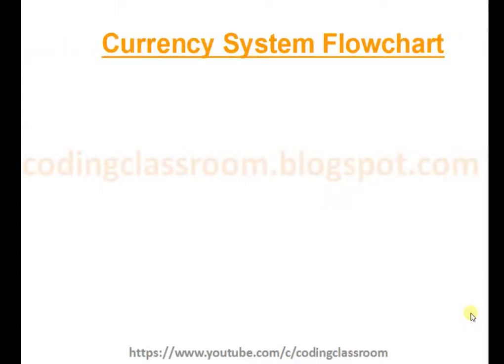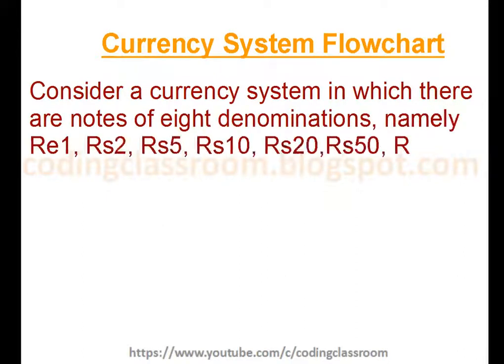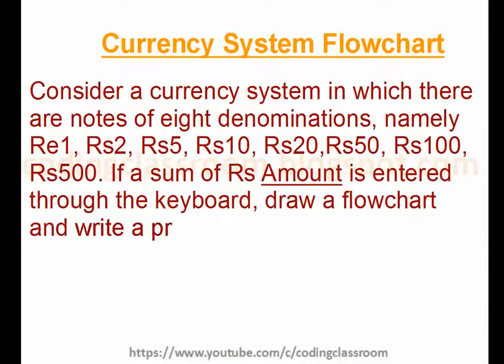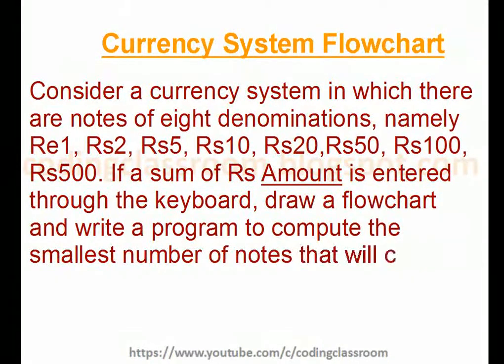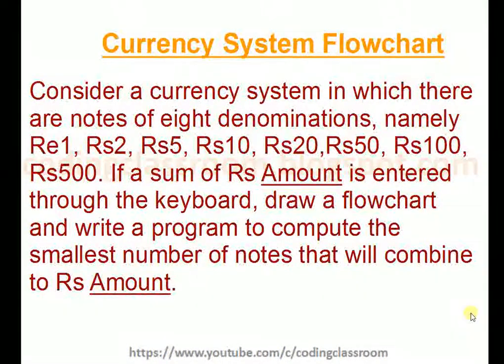Hello guys, welcome to the Coding Classroom. Today we consider an example: a currency system flowchart. We consider a currency system in which there are notes of eight denominations, namely rupees 1, 2, 5, 10, 20, 50, 100, and 500. If we enter a sum amount through the keyboard, we have to draw a flowchart and write a program to compute the smallest number of notes that will combine to give that amount.